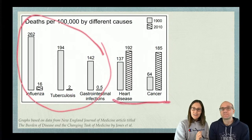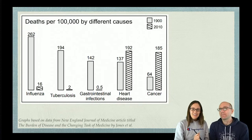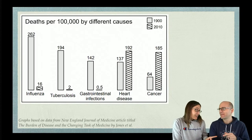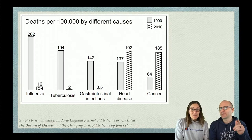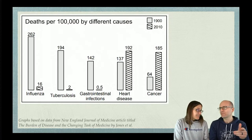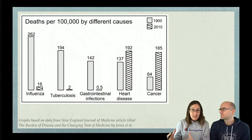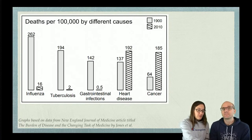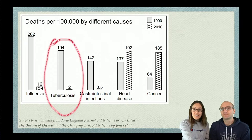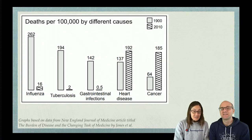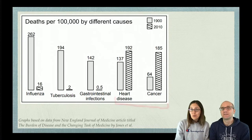But what about the increase in cancer and heart disease? We're living longer. Because of that, old-age diseases are going to be more prevalent. When people live longer, when they get up into their seventies and eighties, there's a higher chance they'll develop heart disease and cancer. But if they die from tuberculosis when they're 30, they never live long enough to develop cancer or heart disease. So these diseases are mostly increasing because people are living longer.